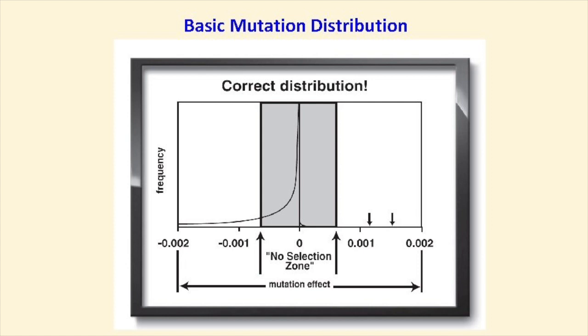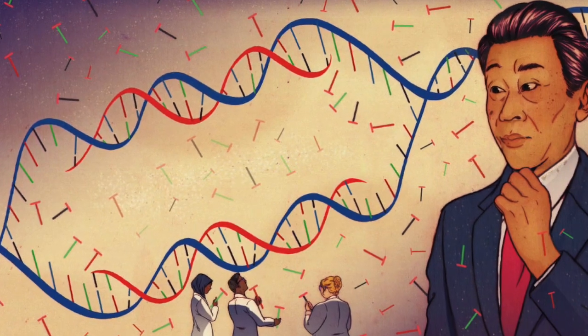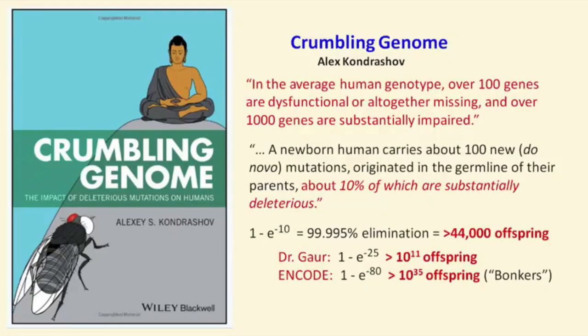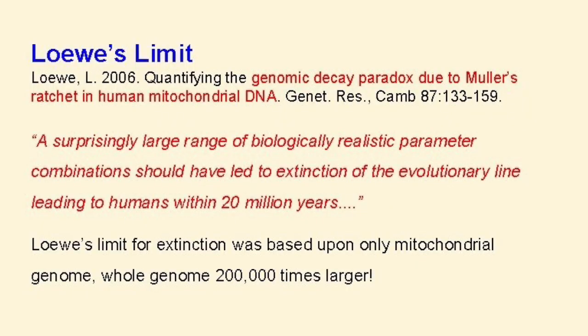Since most mutations are only slightly deleterious and therefore invisible to selection, the majority of mutations are effectively neutral. Natural selection cannot see most mutations. Since mutations degrade information content and accumulate from generation to generation, whole populations naturally head towards extinction. Since as a population we transmit many mutations to the next generation, the process is downhill — and it is disastrous.